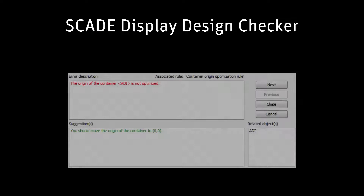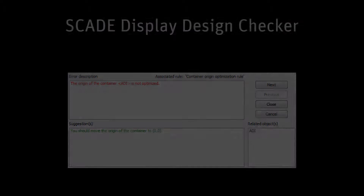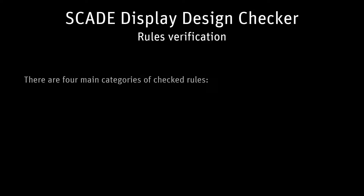The Automatic Design Corrector also indicates suggested corrections and design alterations. There are four main categories of checked rules. Performance rules will have an impact on specification design performances in terms of generated code execution time.